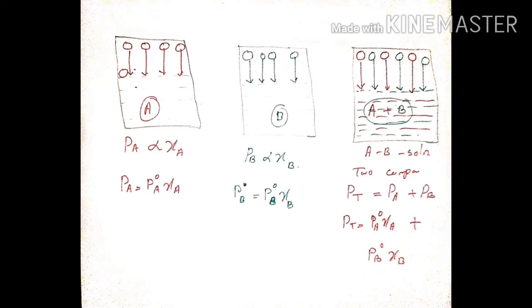The solution is volatile. The partial pressure is directly proportional to the mole fraction. So, PA is directly proportional to chi_A.